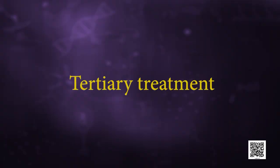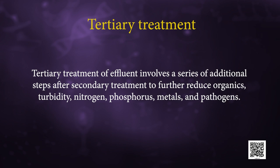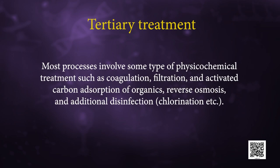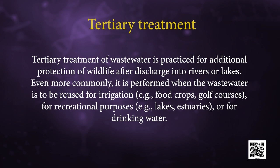Next comes tertiary treatment. Tertiary treatment of effluent involves a series of additional steps after secondary treatment to further reduce organics, turbidity, nitrogen, phosphorus, metals and pathogens. Most processes involve physicochemical treatment such as coagulation, filtration, activated carbon absorption of organics, reverse osmosis and additional disinfection or chlorination. Tertiary treatment is practiced for additional protection of wildlife after discharge into rivers or lakes, and more commonly when the waste water is to be reused for irrigation of food crops, golf courses, recreational purposes such as lakes and fisheries, or for drinking water.